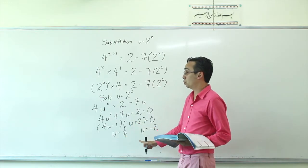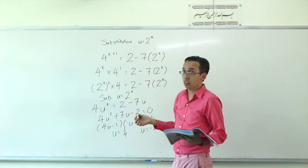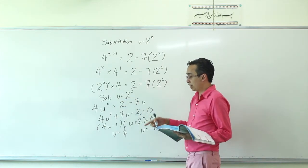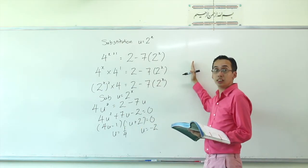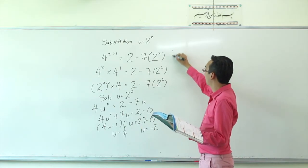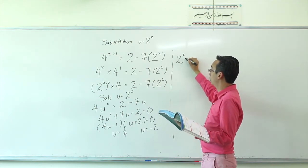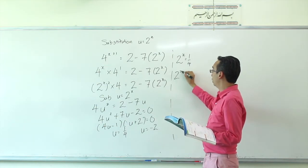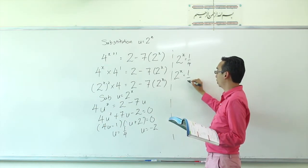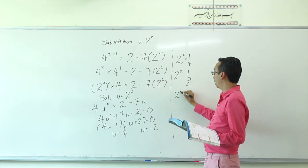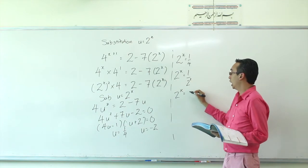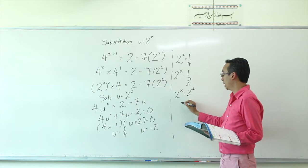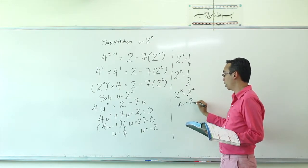But we're not done — this is U, and what we're trying to find is X. So we have to convert back. U is actually 2 to the power of X. For U equals 1 quarter: 2 to the power of X equals 1 over 2 squared, which is 2 to the power of negative 2. Since the bases are the same, X equals negative 2.